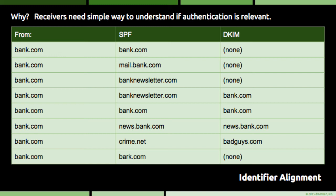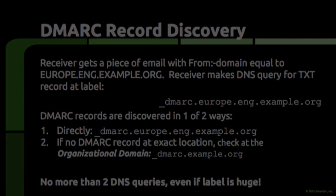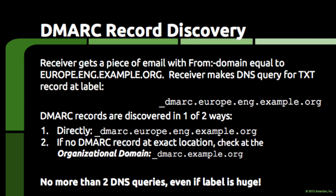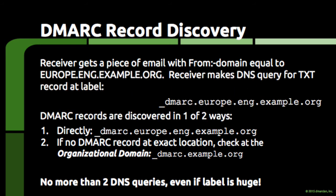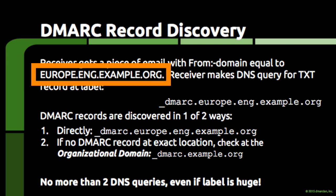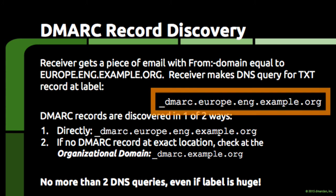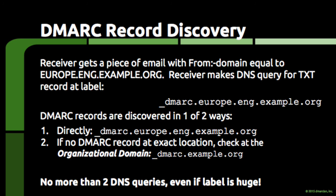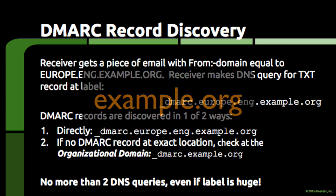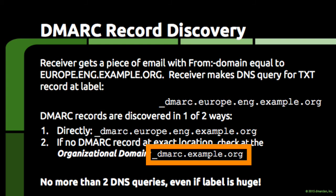Before getting into what DMARC records look like, we'll touch briefly on how DMARC records are discovered. When an email receiver processes a piece of email in the context of DMARC, it extracts the domain found in the FROM header. This domain forms the basis of where the receiver looks for a corresponding DMARC record. The receiver will add an _dmarc prefix to the domain and query DNS for a text record. If the query returns nothing relevant to DMARC, the receiver then extracts the organizational domain and tries again with _dmarc prepended. DMARC record discovery is therefore limited to just two DNS lookups.